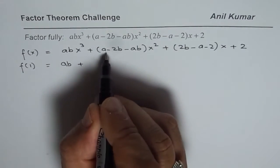We will divide abx³ + (a − 2b − ab)x² + (2b − a − 2)x + 2 by (x − 1). Taking the first two terms, we multiply by abx², giving abx³ as the first term and −abx² as the second term.